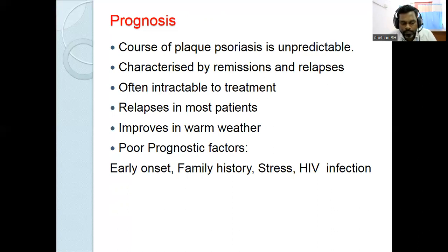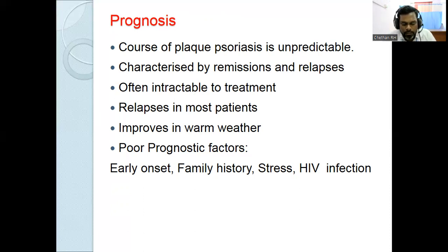Classification based on PASI (Psoriasis Area Severity Index) score: mild (PASI less than 10) and moderate to severe (PASI more than 10). Based on morphological pattern: plaque, guttate, pustular, unstable, and erythrodermic psoriasis. Atypical forms: rupioid, ostraceous, digital, interdigital, and elephantine. Based on site: scalp, sebo-psoriasis, mucosal, palmoplantar, nail, and inverse/flexural psoriasis.